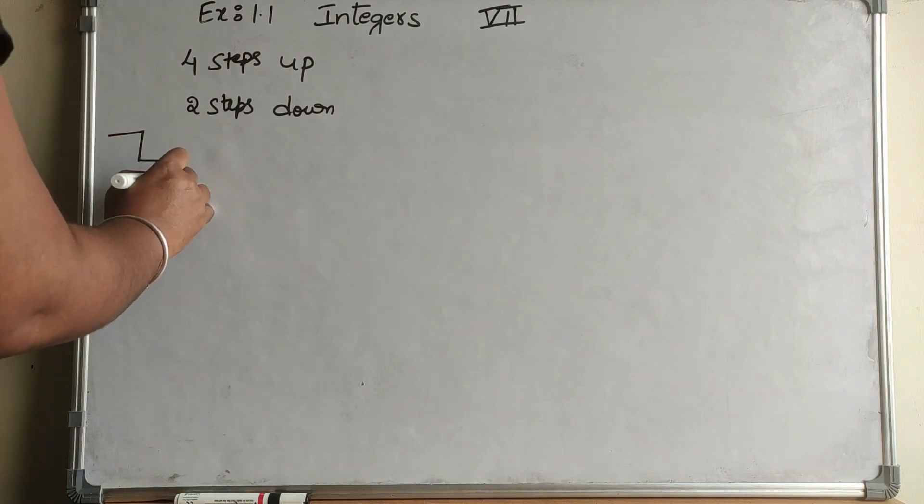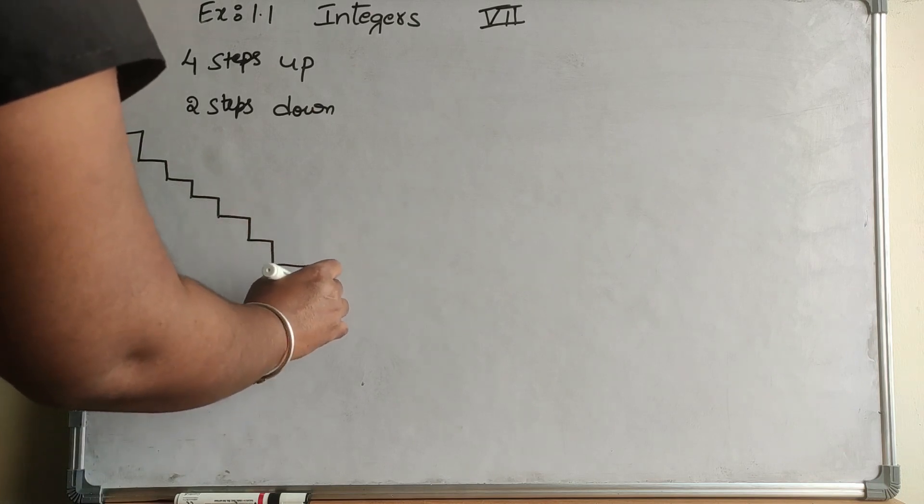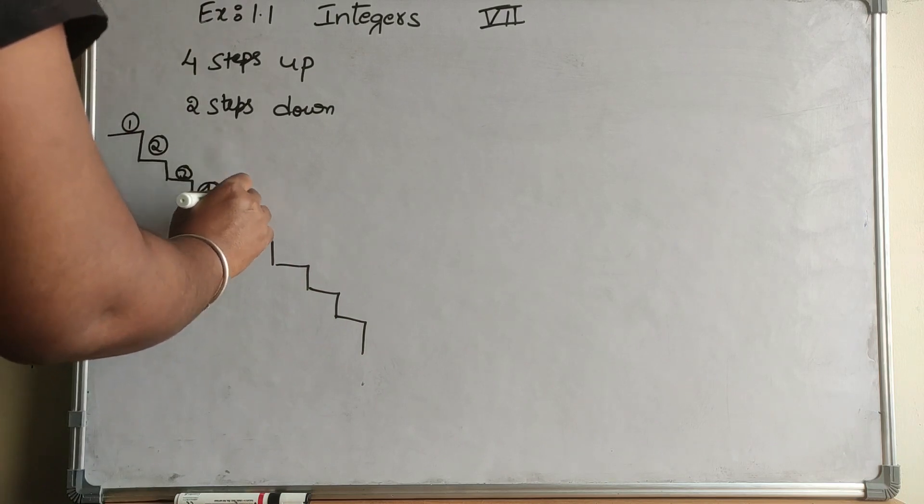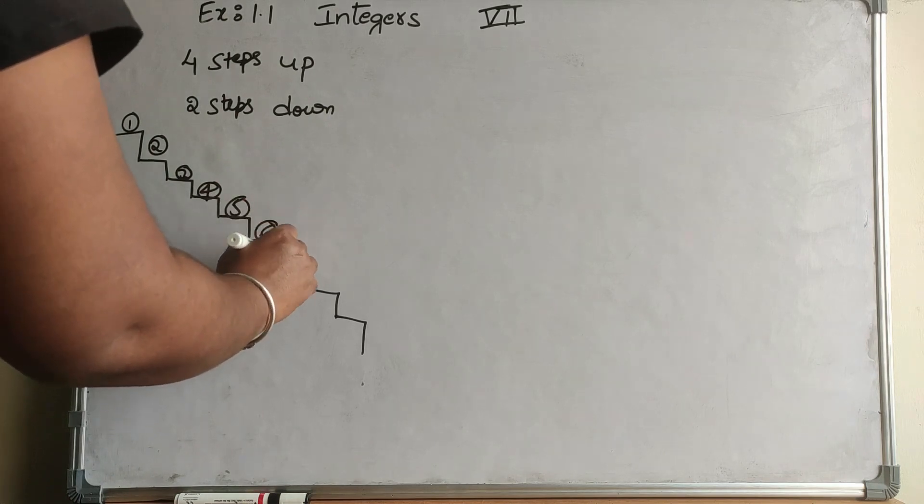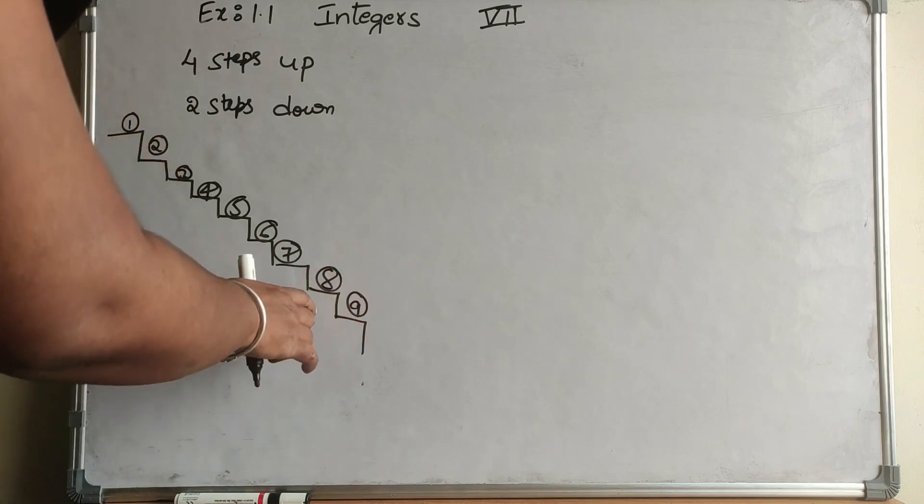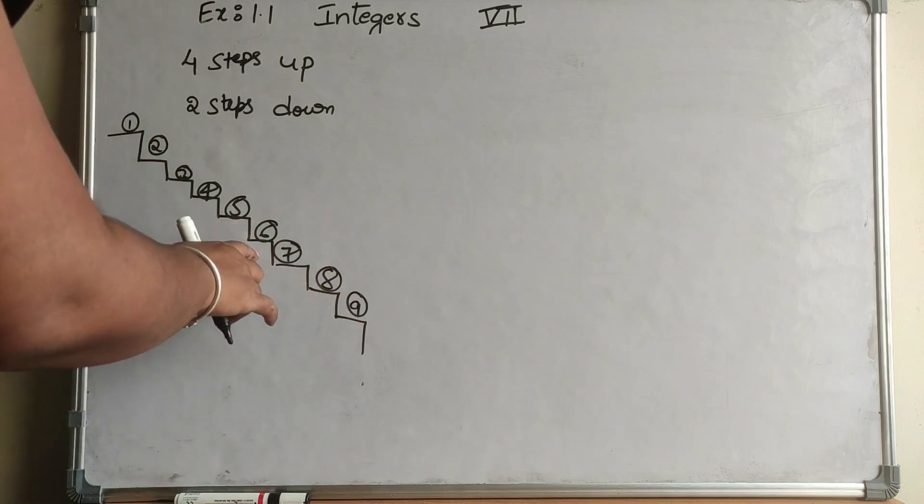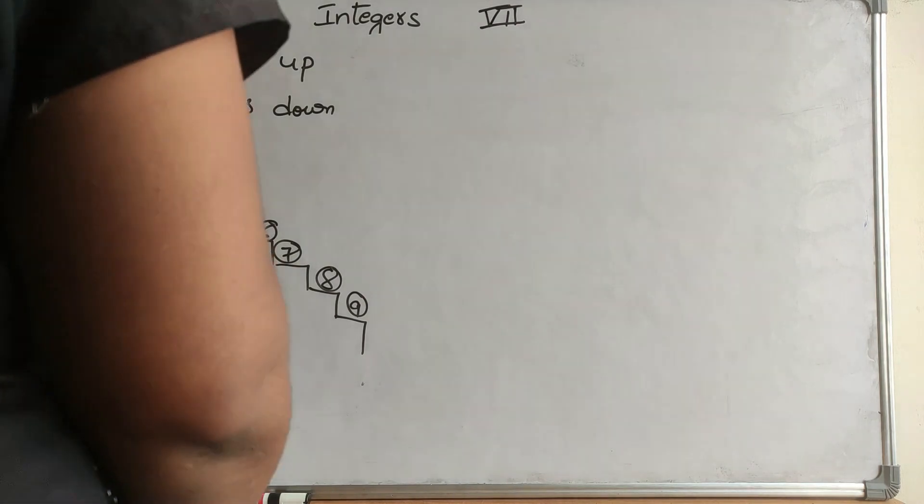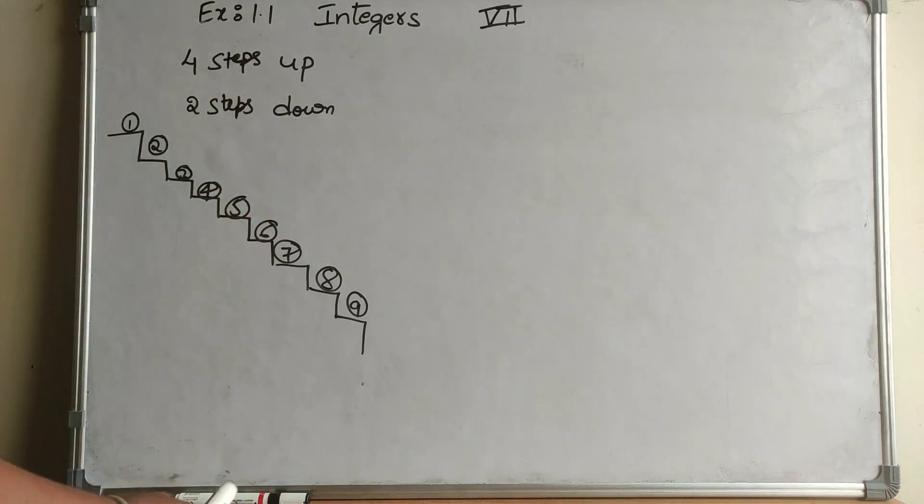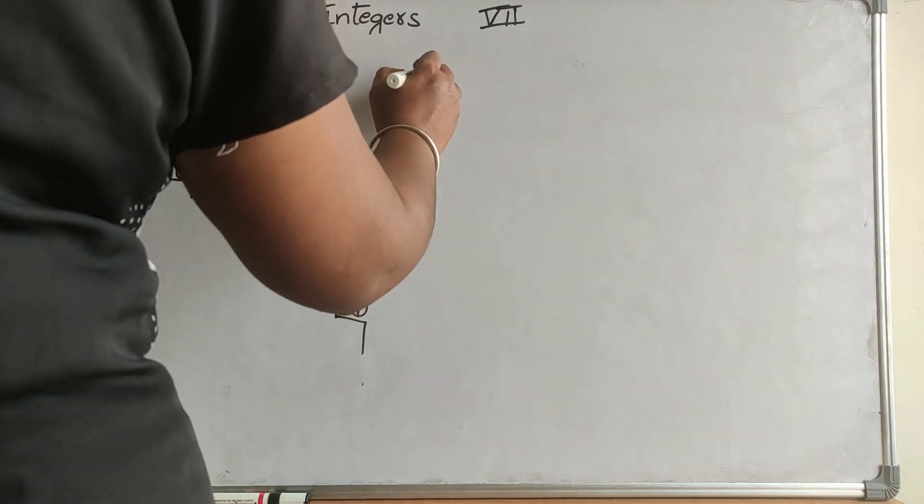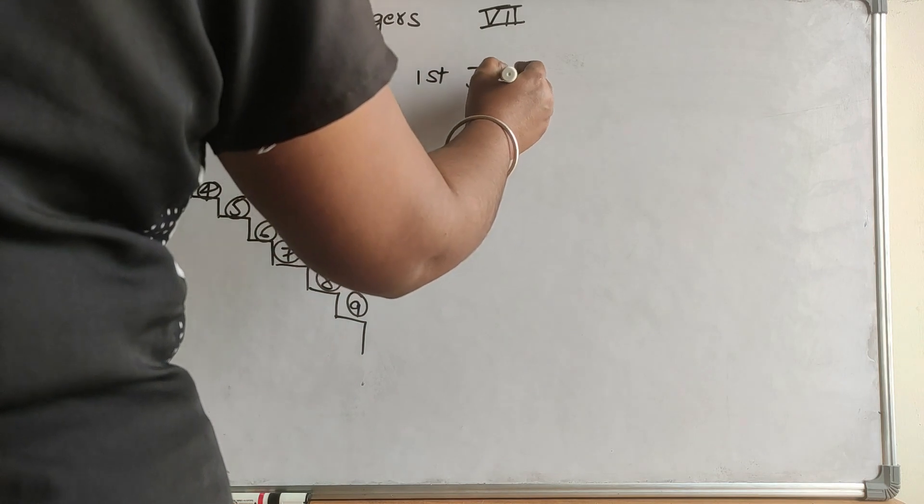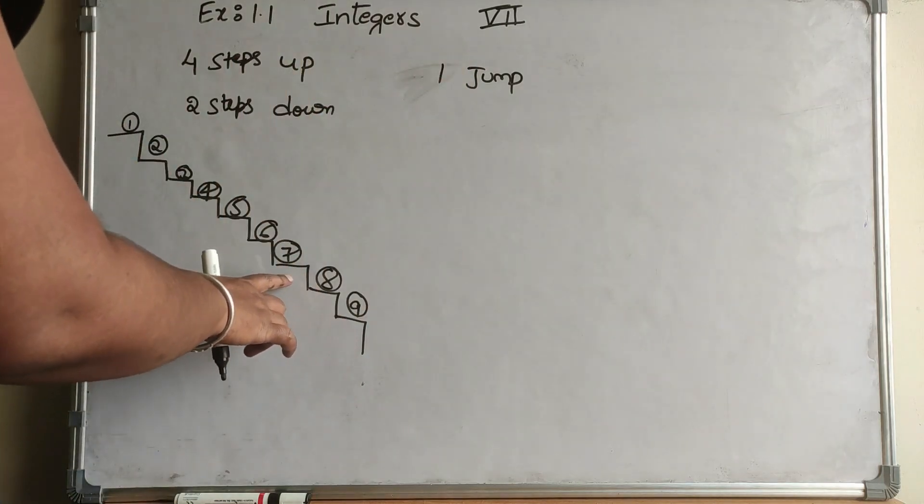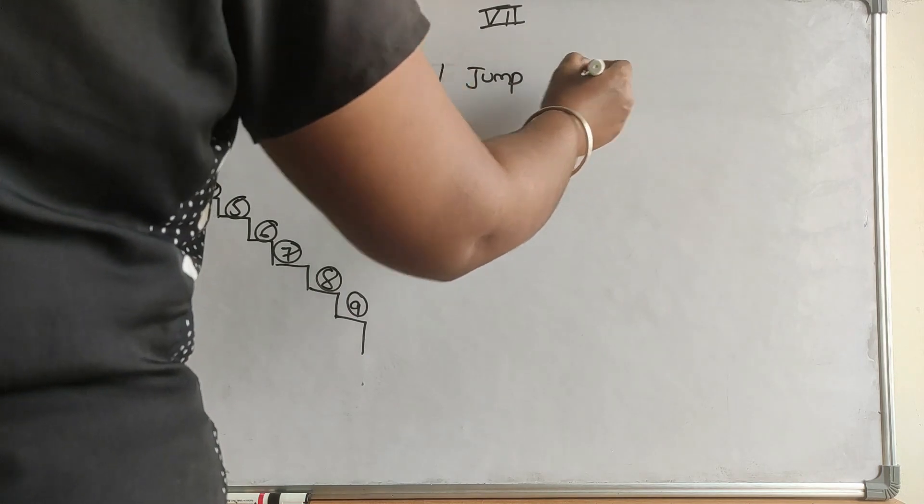Steps are 1, 2, 3, 4, 5, 6, 7, 8, 9. It's on the 9th step. If it's going 4 steps up and 2 steps down, how many jumps does it take to go back to the normal place? From the 9th step, in the first jump from 9 to 4 steps back is the 5th step going up.